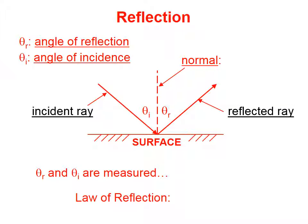After it hits the surface, we call it a reflected ray. And it turns out that there's a numerical relationship between the angle of the incident ray and the angle of the reflected ray. That angle is measured relative to the normal line,